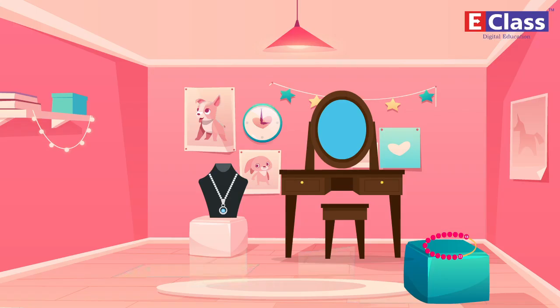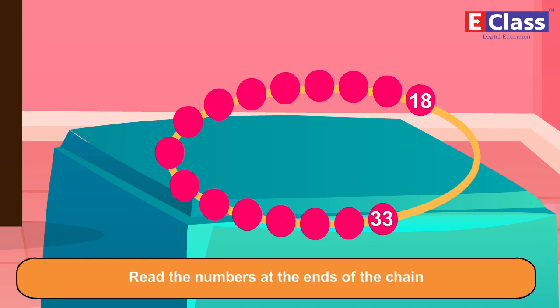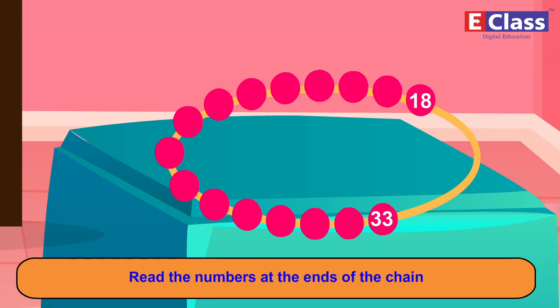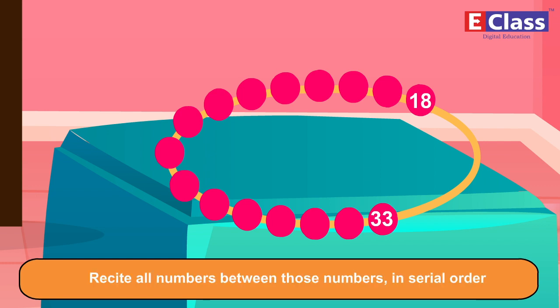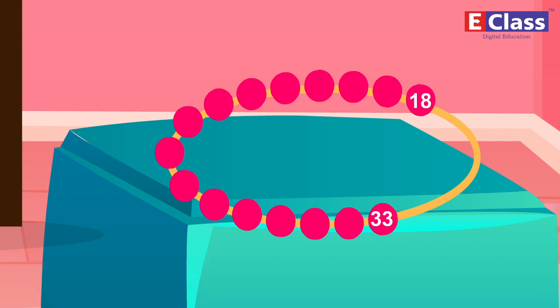Given alongside is a numbered chain. Read the numbers at the ends of the chain. Recite all numbers between those numbers in serial order.